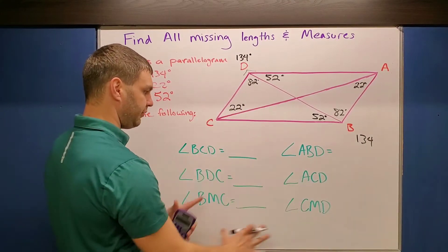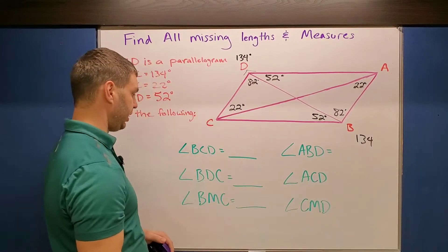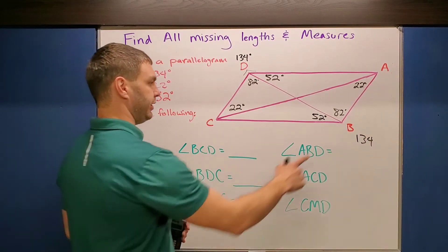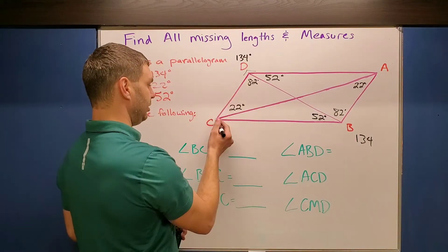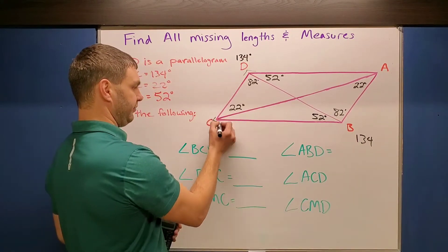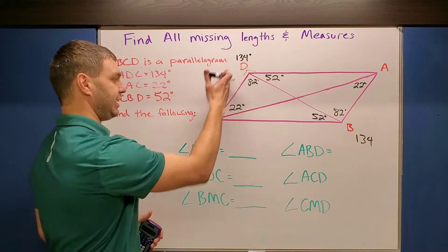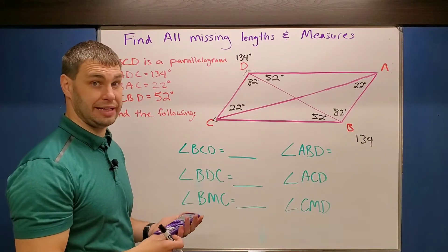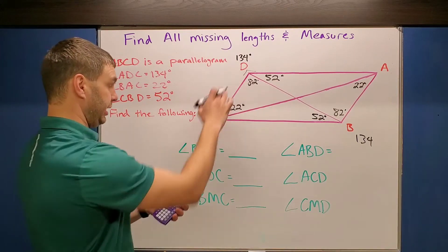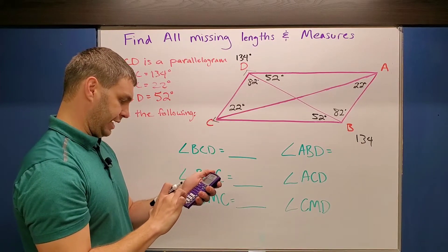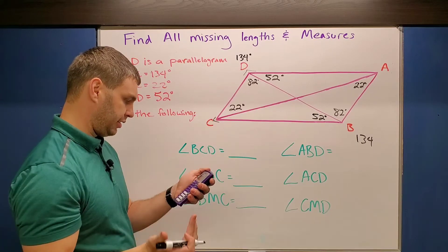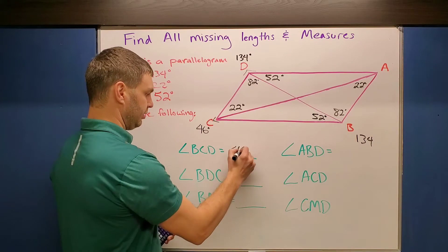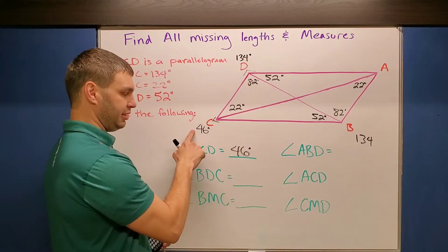First off, it wants us to find BCD. BCD is this entire angle. To figure out this one, you have to remember that consecutive angles in a parallelogram are supplementary — they add up to 180 degrees. So I'm going to take 134, subtract that from 180, and that gives me 46 degrees. I'll put that into my picture because we might use it again later.